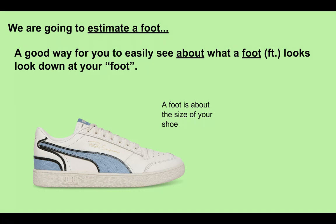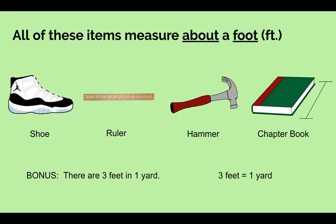Now we're going to learn how to estimate what a foot is. A good way to easily see about what a foot looks like is to look down at your own foot — a foot is about the size of your shoe. All of these items measure about a foot: a shoe, a ruler, a hammer, and a chapter book. Notice that for the chapter book, it is the length and not the thickness — the length of a chapter book is about one foot.